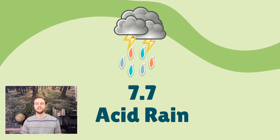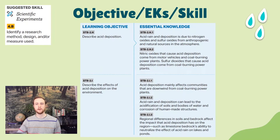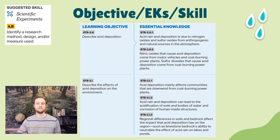Hey everybody, it's Mr. Smedes and welcome to APE's video notes for topic 7.7, which is acid rain. Our objective for the day is to be able to describe acid deposition and its effects on the environment. The skill we'll practice at the end involves identifying a research design method used to measure the effects of acid deposition.